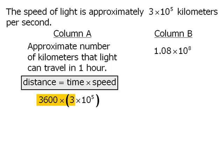First, I'll multiply 3600 by 3 to get 10,800. And now I'm going to rewrite 10,800 in scientific notation, which we'll multiply by 10 to the power of 5.